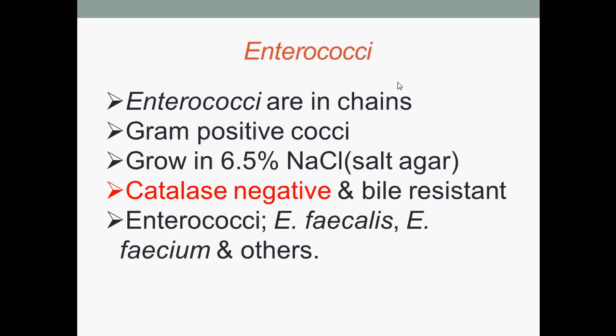A bit about its history: enterococcus were classified as group D streptococcus until 1984, when genomic DNA analysis suggested a separate genus classification would be appropriate. Enterococci are gram-positive cocci that grow in 6.5% sodium chloride salt agar, are catalase negative and bile resistant. The two common commensal species in the human intestines are Enterococcus faecalis and Enterococcus faecium.